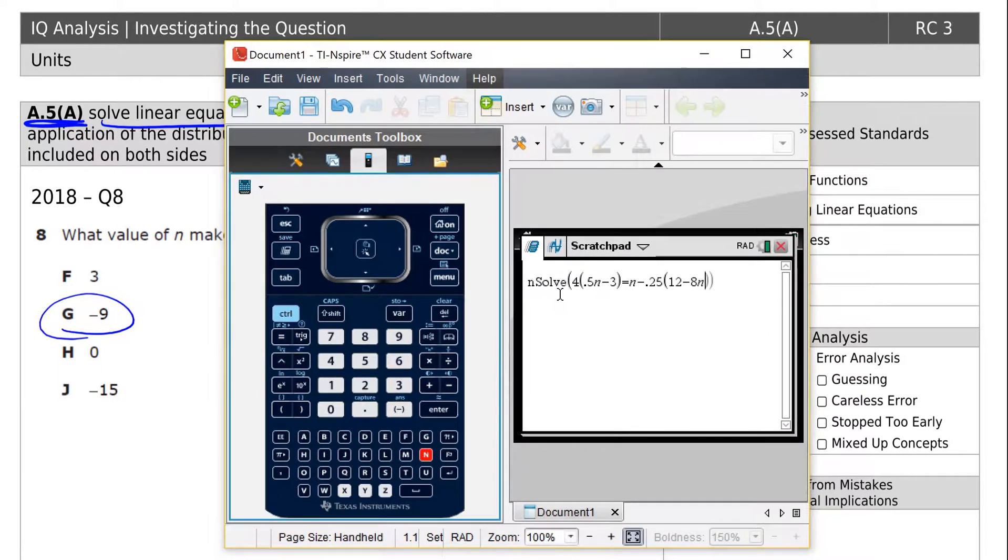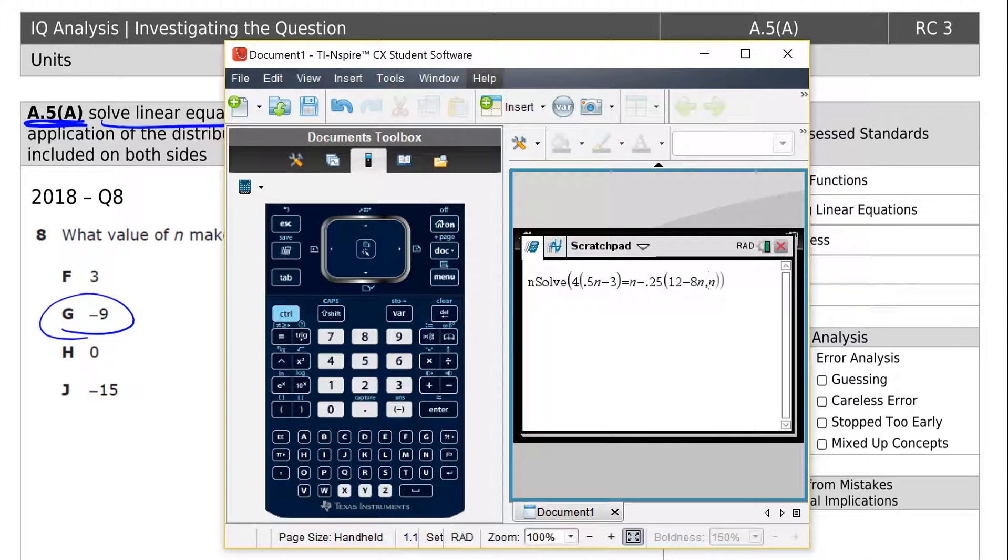And then the key that many students forget, once you type the whole equation in, you're not done. You have to tell the calculator what to solve for by hitting comma, variable n. And then when we hit enter, we see there's an error.